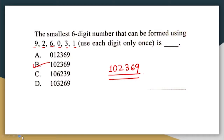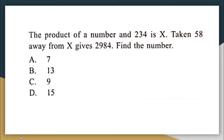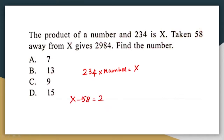Next question: the product of a number and 234 is x. Taking 58 from x gives 2,984. Find the number. So 234 multiplied by some number equals x, and x minus 58 equals 2,984. Therefore, x equals 2,984 plus 58.